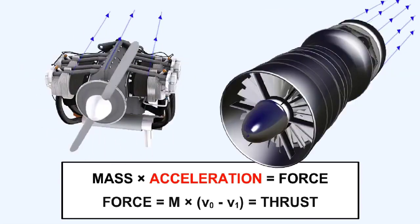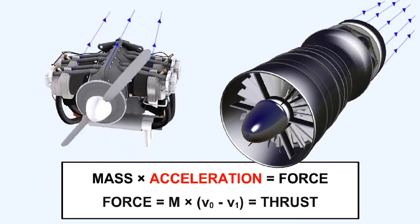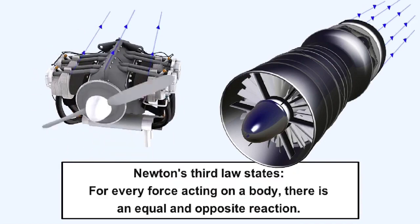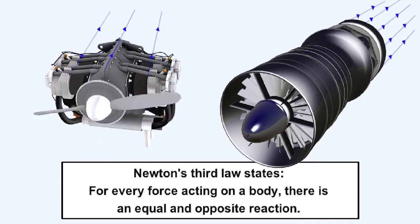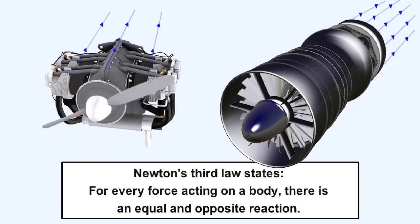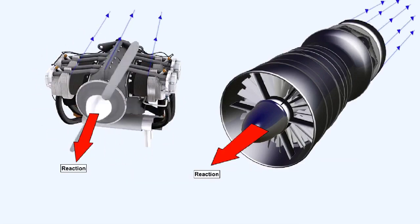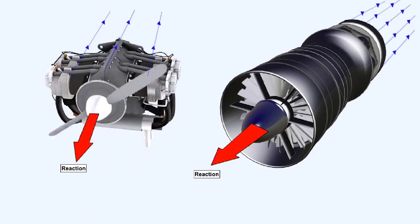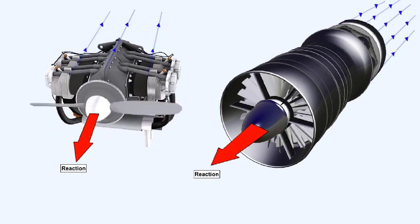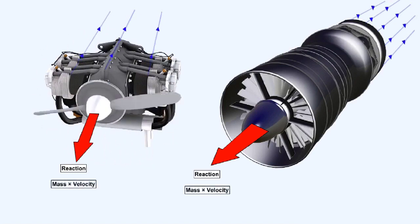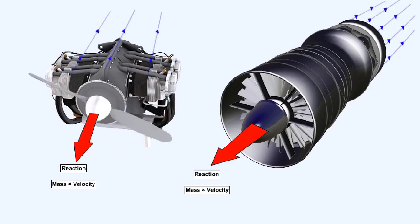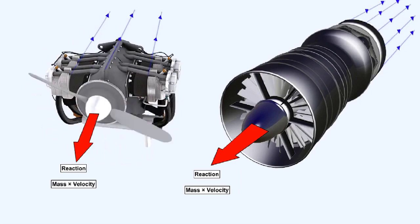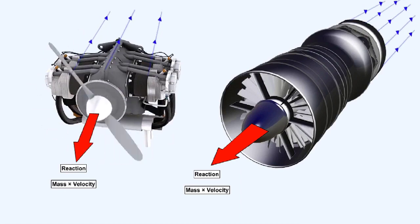With the piston engine propeller combination, the propeller drives a relatively large mass of air backwards fairly slowly, while the gas turbine throws a small mass of air backwards relatively quickly. Newton's third law states that for every force acting on a body there is an equal and opposite reaction. In both cases, the force created by the mass of air being thrown backwards and its velocity generates a reaction in the opposite direction, driving the aircraft forwards. It must be remembered that the jet reaction does not result from the pressure of the jet on the atmosphere; the resultant thrust is proportional to the mass of air expelled and the velocity change imparted to it.